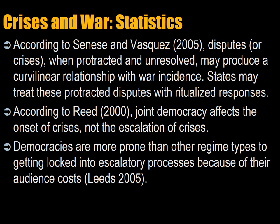According to Sinise and Vasquez, disputes or crises — when protracted and unresolved — may produce a curvilinear relationship with war incidents. States may treat these protracted disputes with a ritualized response, so it doesn't necessarily mean they're going to go to war. According to Reid, joint democracy affects the onset of crises but not the escalation of crises. So if two democracies genuinely dislike each other and have a profound dispute, they could go to war. But typically, joint liberal democracy limits the outbreak of crises — most countries simply refer the dispute to lawyers, committees, or their foreign ministries. Democracies are more prone than other regime types to getting locked into escalatory processes because of their audience costs: the leader makes a promise to the population and can be removed through an election. Whereas an authoritarian leader can always disregard and is less vulnerable to the opinions of their population, especially if they haven't yet lost a war.